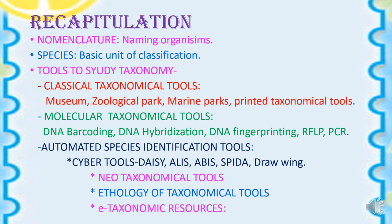Let us recap. In today's topic we came across nomenclature, which refers to the naming of organisms. There are two types: binomial nomenclature, which names organisms with two scientific names, and trinomial nomenclature, which names animals with three scientific names. We also came across species, which is the basic unit of classification. Scientists like John Drake, Carolus Linnaeus, and Charles Darwin studied species in detail.